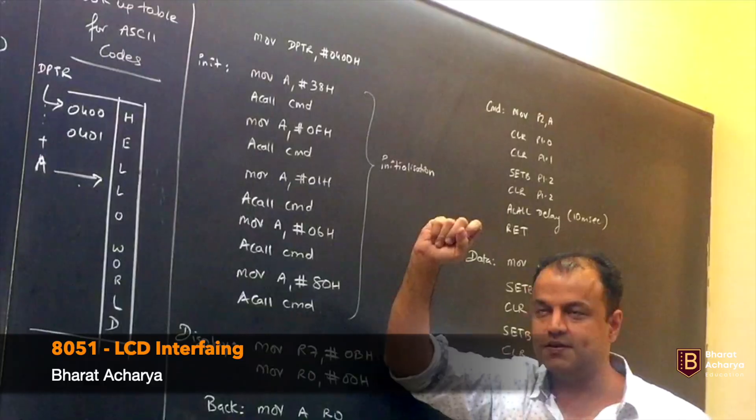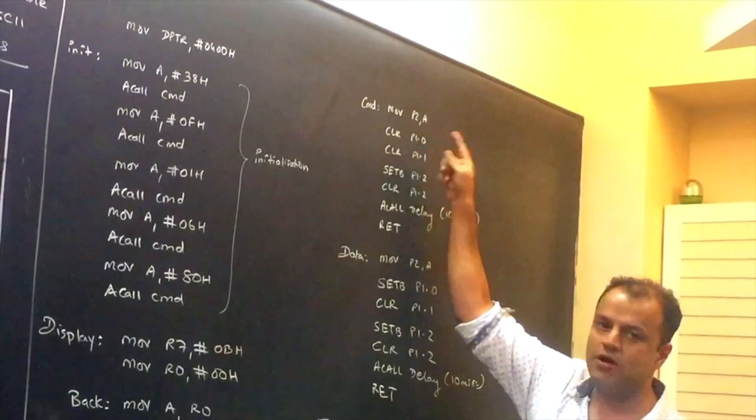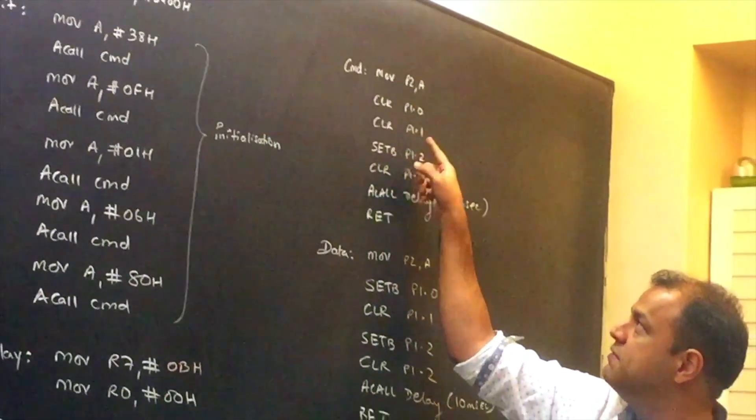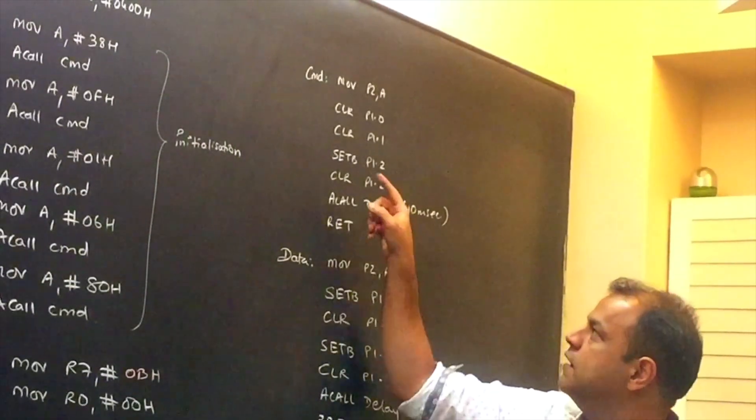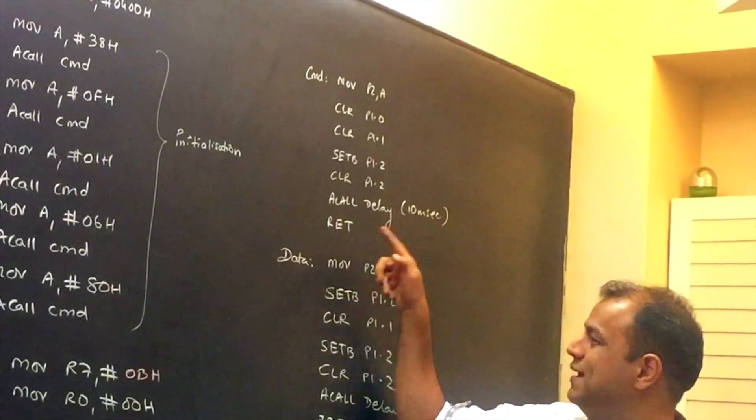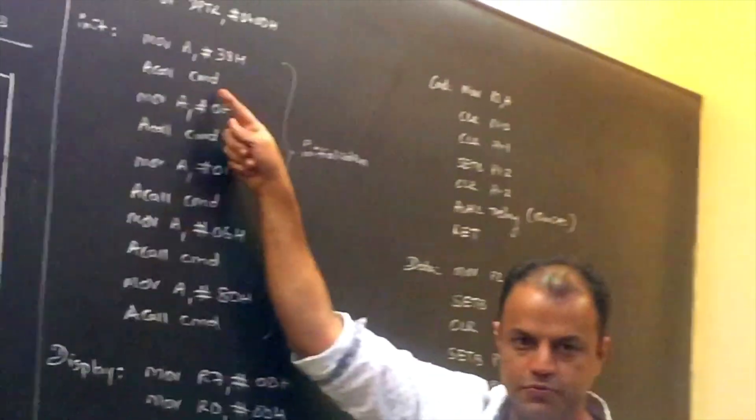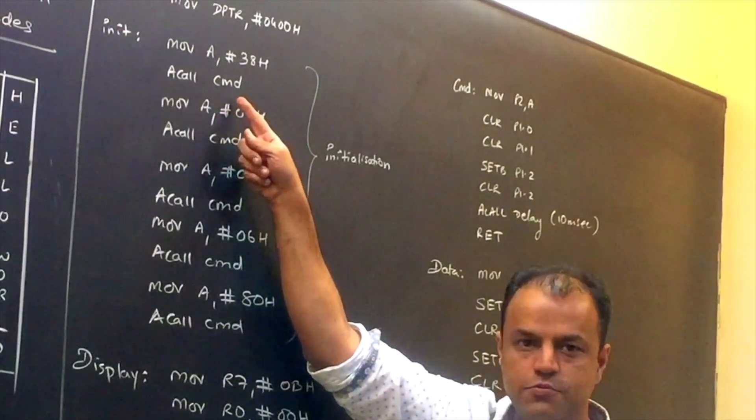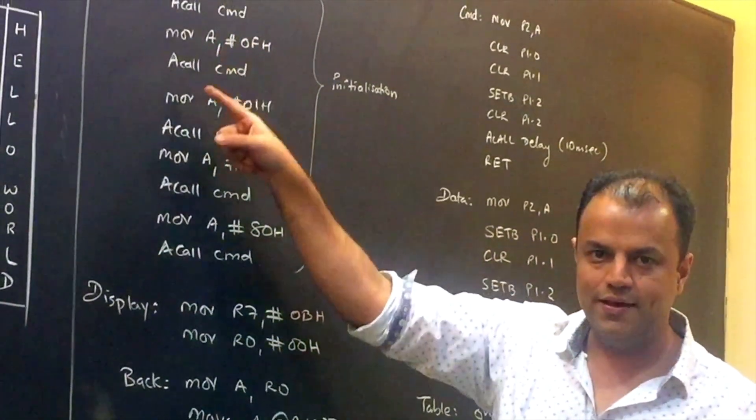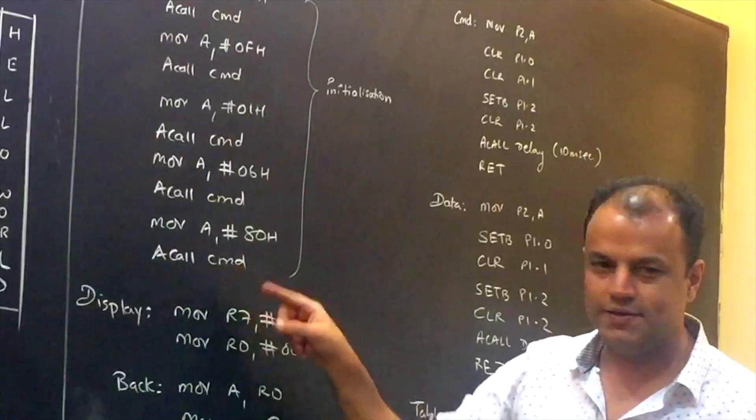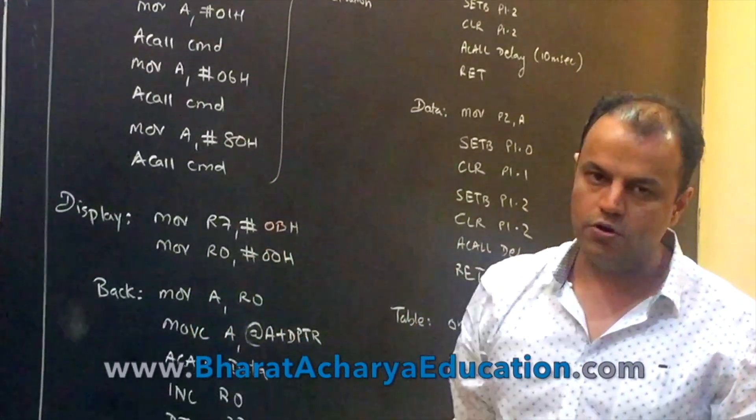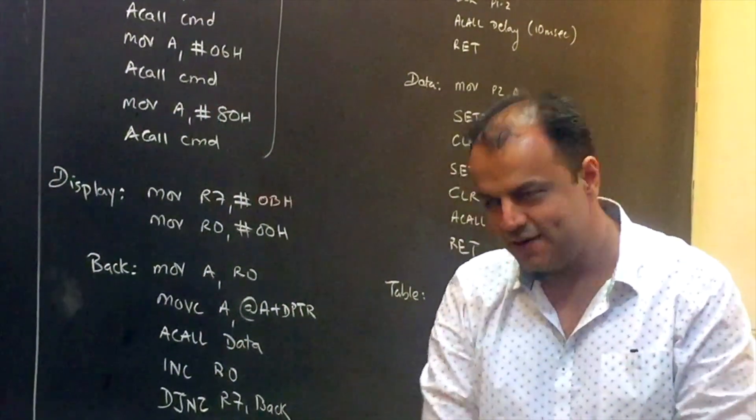Put the command in A register. Move A, hash 38. So your first command is 38. Move P2, A - so you put the command on the port. Clear P1.0, that means you made RS 0. Clear P1.1, that means you made R/W also 0. Set P1.2, clear P1.2, that means you have done the latching. Call a delay of 10 milliseconds and return. This was the procedure done to send 38 by calling a subroutine by the name command. Now all the commands are given in the same way. Just put the command in A, call the routine.